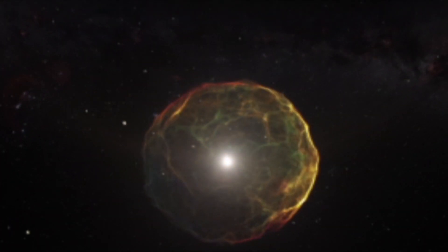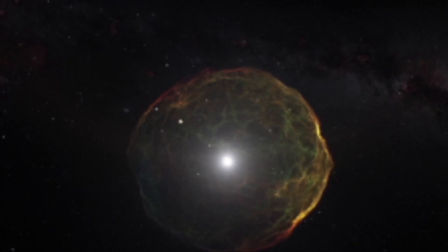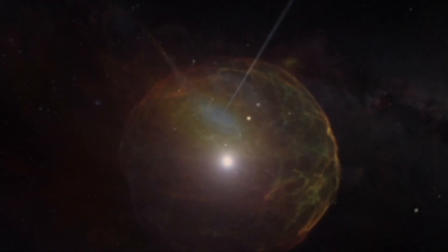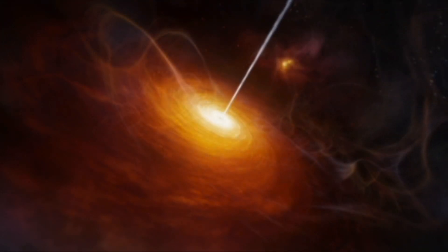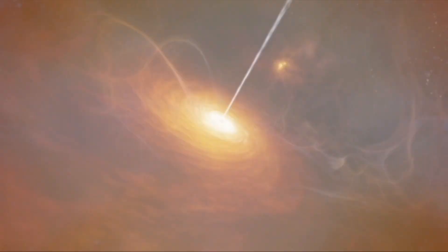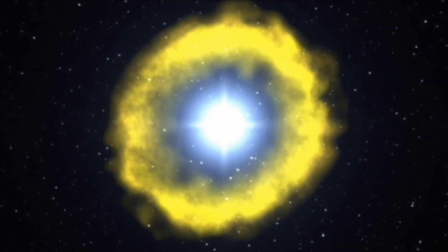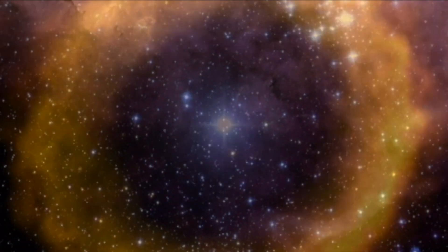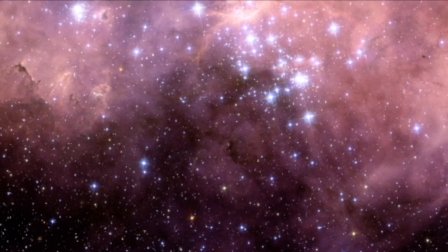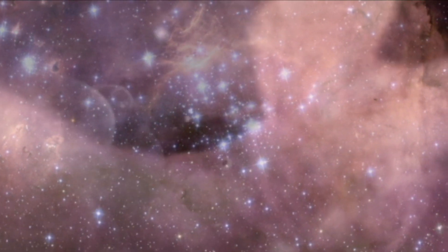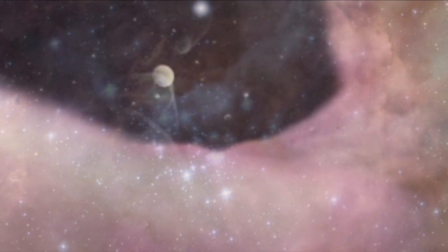Each one would produce either a superluminous pair-instability supernova or collapse directly to a black hole. These supernovae would come to enrich the surrounding gas with chemical elements produced in their interiors, and future generations of stars would all contain these heavier elements, referred to by astronomers as metals.